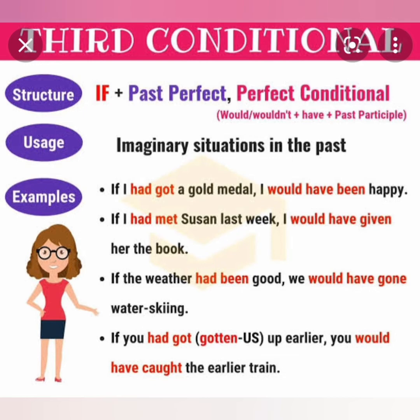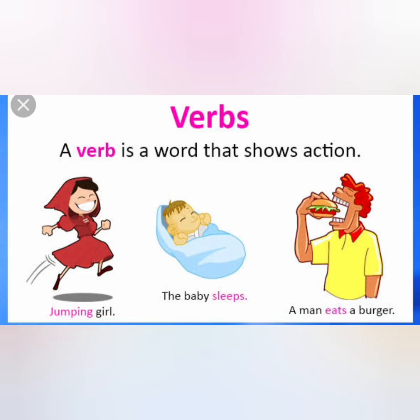'If I had got a gold medal, I would have been happy.' 'If I had met Susan last week, I would have given her the book.' 'If the weather had been good, we would have gone water skiing.' You see the highlighted words — learn that format. 'If you had gotten up earlier, you would have caught the earlier train.' It is impossible for the condition to be fulfilled because it refers to the past.